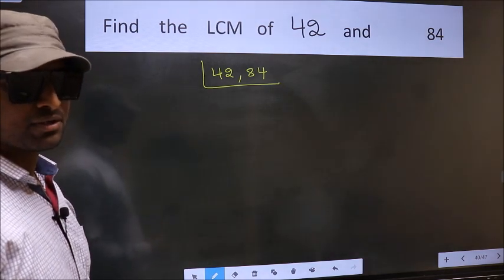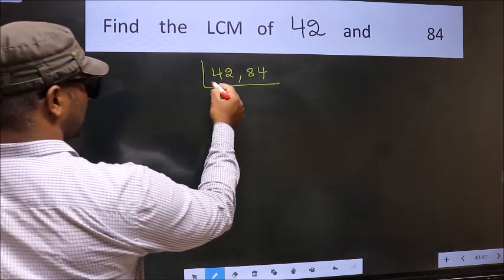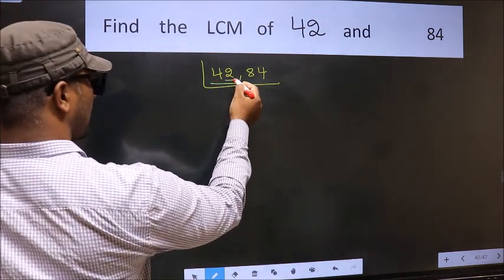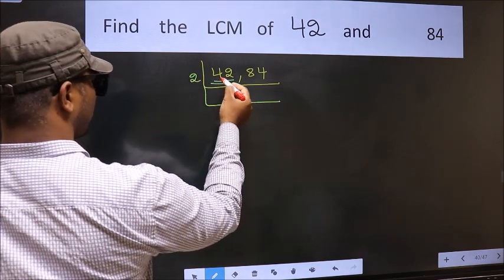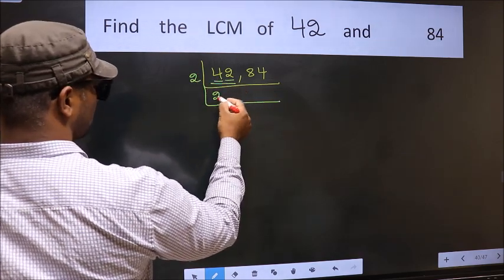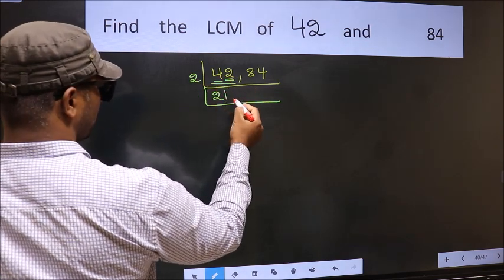Now focus on the first number which is 42 here. For this number, last digit 2, even, so take 2. First number 4, when do we get 4 in 2 table? 2 times 2 is 4. The other number 2, when do we get 2 in 2 table? 2 times 1 is 2.